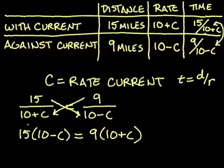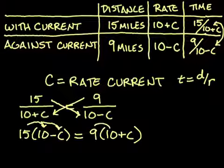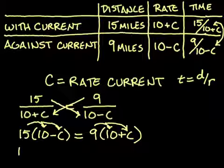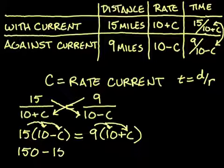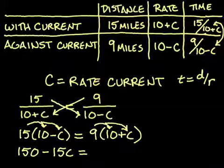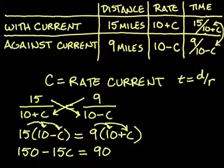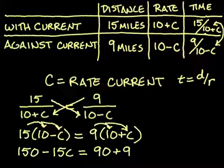This we solve just like any other linear equation. First off, let's distribute these to get rid of the parentheses. So we're going to have 150 minus 15C equal to 90 plus 9C.